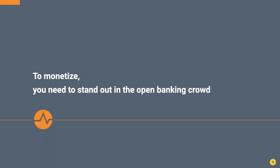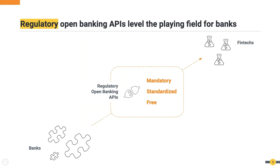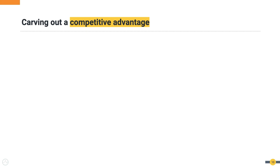How does a bank basically monetize open banking and create an advantage for itself, standing out from the crowd? Regulatory open banking APIs create a level playing field — the open APIs are mandatory, standardized, and the data available through them is free of charge. Banks have to share this data and fintechs can obtain it. But although the open APIs at each bank are the same, there are several factors that make certain banks stand out and be better positioned to build strong competitive advantages through open banking than others.